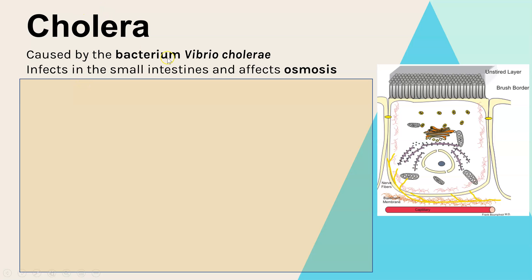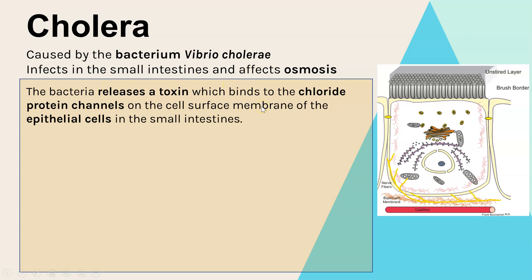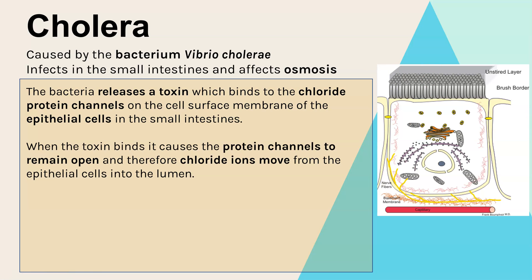Cholera is a disease caused by a bacterium called Vibrio cholerae and it affects the small intestines and osmosis. The bacteria releases a toxin which binds to the chloride protein channels on the cell surface membrane of epithelial cells in the small intestines. When that toxin binds it causes those protein channels to remain permanently open, and as a result chloride ions move from within the epithelial cell into the lumen.